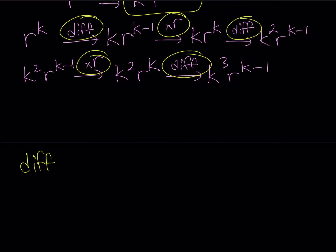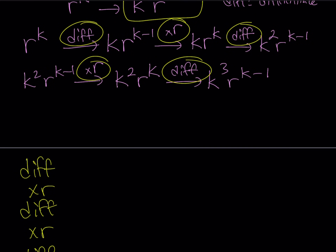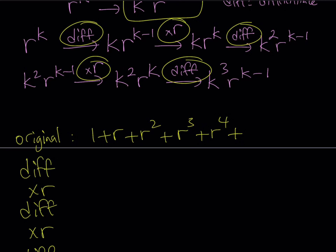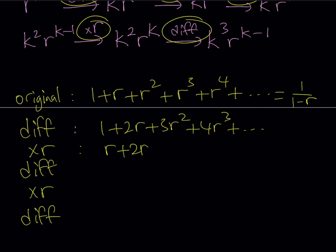Let's apply this to our original expression. My original is the geometric series: 1 plus r plus r squared plus r cubed plus r to the fourth, and so on. Calling that s, it equals 1 over 1 minus r. I'll track every step and apply those steps to the right-hand side. Differentiating gives 1 plus 2r plus 3r squared plus 4r cubed, and so on. Then multiplying by r gives r plus 2r squared plus 3r cubed plus 4r to the fourth, and so on.